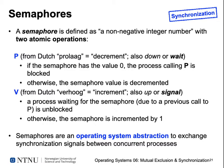The mirror operation to leave a critical section is called V, from the Dutch word 'verhoog', which means increment — also called 'up' or 'signal'. If a process leaving a critical section calls V, then one of the processes waiting for the semaphore is unblocked. If nothing had been waiting, the semaphore is just incremented by one to indicate it's free again. Semaphores are an abstraction provided by the operating system, and can be used to exchange synchronization signals between concurrently running processes.